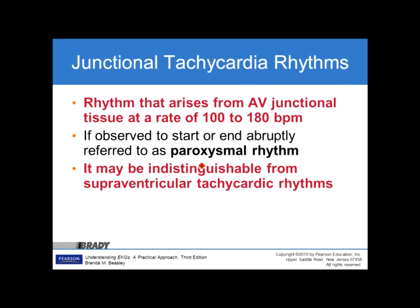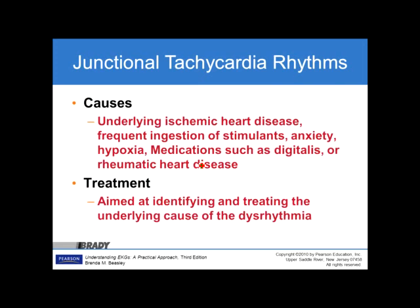Junctional tachycardia is a rhythm arising from AV junctional tissue at a rate of 100 to 180 beats per minute. If observed to start or end abruptly, it is referred to as a paroxysmal rhythm, and it may be indistinguishable from SVT. Causes include underlying ischemic heart disease, frequent ingestion of stimulants, anxiety, hypoxia, medications such as digitalis, or rheumatic heart disease. Treatment is aimed at identifying and treating the underlying cause of the dysrhythmia.